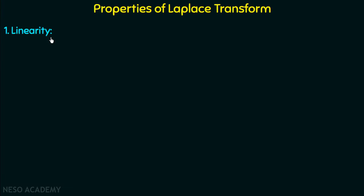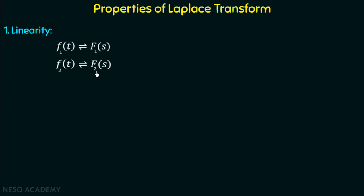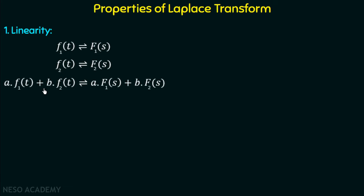The linearity property is a combination of two different principles: the homogeneity principle and the superposition principle. So if f1(t) is a time domain function with Laplace domain F1(s), and f2(t) is another time domain function with Laplace domain F2(s), then according to the linearity property, a·f1(t) + b·f2(t) has a Laplace transform of a·F1(s) + b·F2(s).